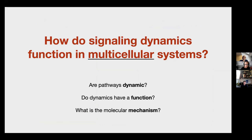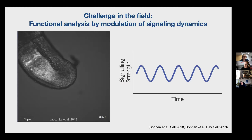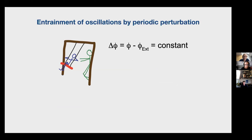Now that we can quantify dynamics, the next step is to understand what is really the function of these dynamics. To study the function of signaling dynamics, it's not enough to just remove Notch signaling completely. If we want to know what the function of the period or the phase of an oscillation is, we have to be able to change this parameter specifically and analyze the effect. I have previously set up a microfluidic system where we culture embryonic tissue in microchambers and use programmable pumps to control when drug is flushed over the chip. We use an entrainment approach — we slightly push the system with a certain period to adjust the endogenous oscillations to our periodic pushing.